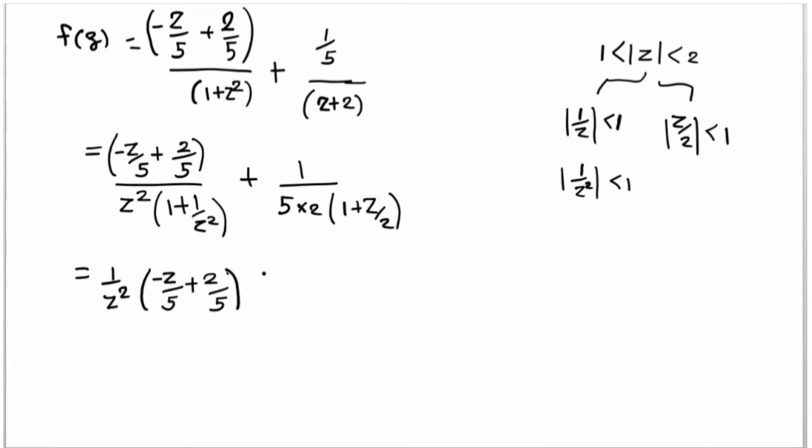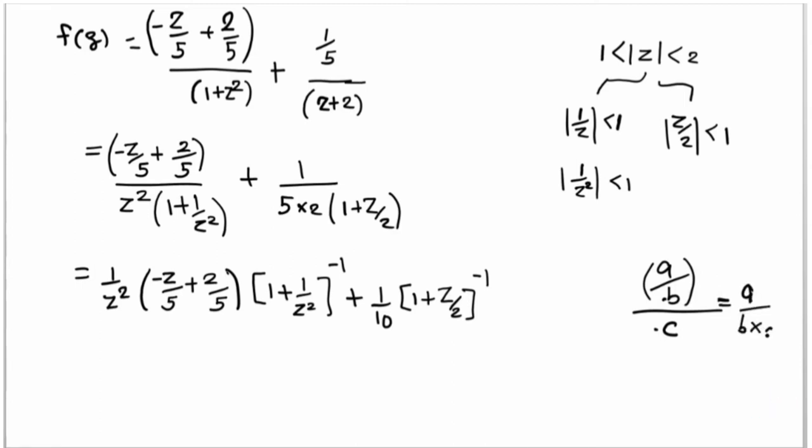And from the second term, take 2 common to get (1/5) divided by 2(1 + z/2). Shift the division brackets to numerator: (1/z²)(-z/5 + 2/5)(1 + 1/z²)^(-1) + (1/10)(1 + z/2)^(-1). These division terms become multiplication.